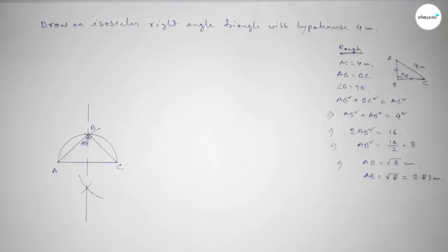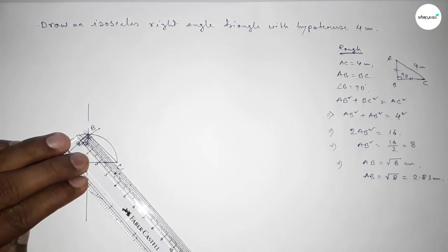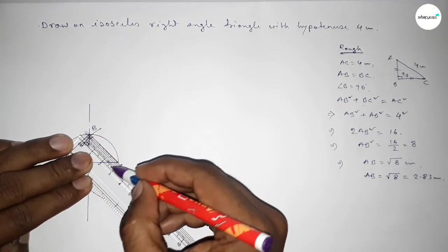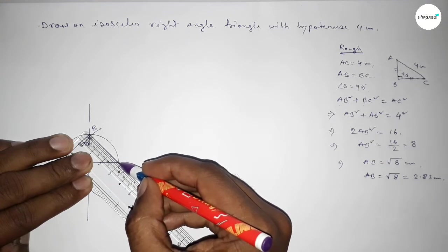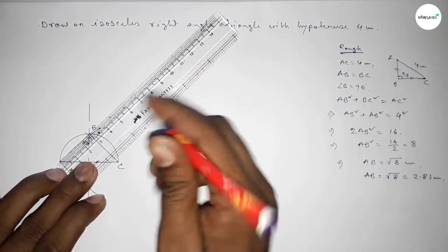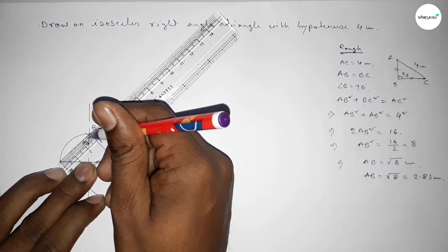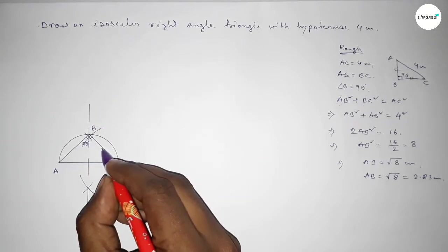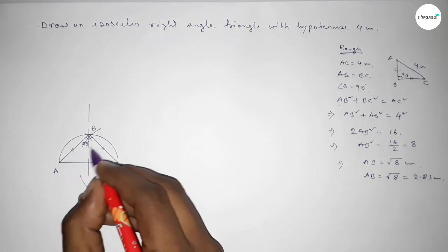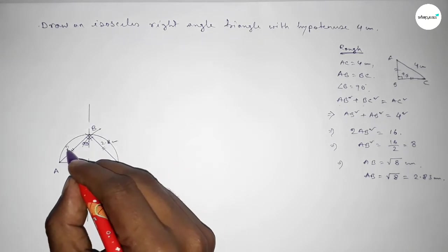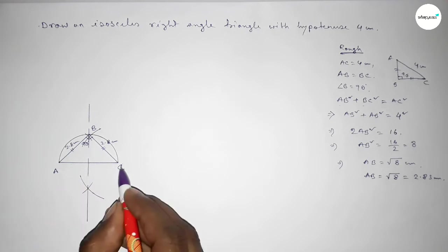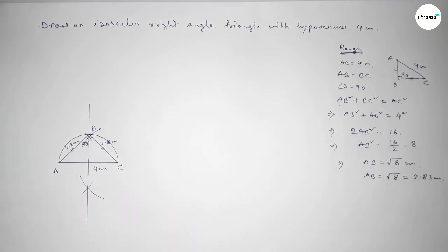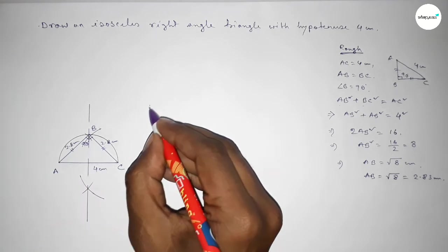Now checking the side AB and BC are equal or not. This is 2.8 approximately, and this is 2.8 centimeter. This is 2.8 centimeter perfectly. So BC side and AB side are equal. This is 2.8 centimeter and this is also 2.8 centimeter and this is 4 centimeters.